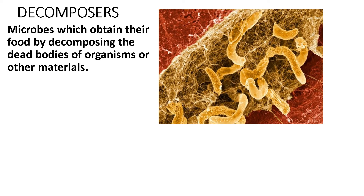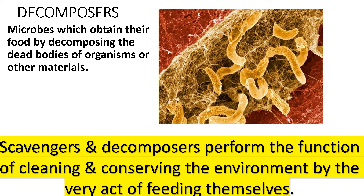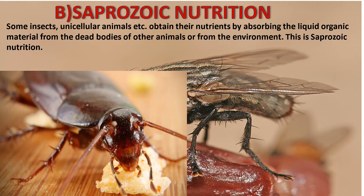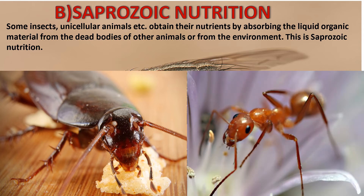Decomposers are microbes which obtain their food by decomposing dead bodies of organisms or other materials. Examples include bacteria, fungi, etc. Decomposers and scavengers perform the function of cleaning and conserving the environment by the very act of feeding themselves — isn't that amazing? Some insects and unicellular animals obtain their nutrients by absorbing liquid organic materials from the dead bodies of other animals or from the environment. This is saprozoic nutrition. The best example is a housefly feeding on a dead organism. Also, cockroaches and ants feed on dead foodstuff, so housefly, cockroaches, and ants show saprozoic nutrition.